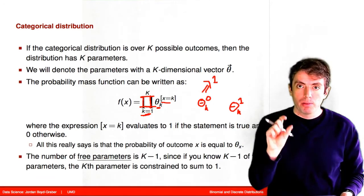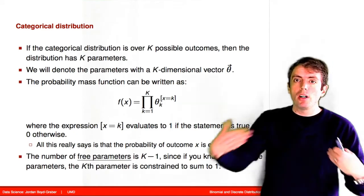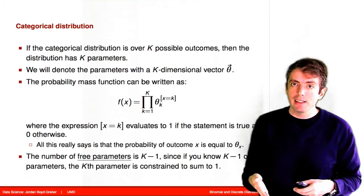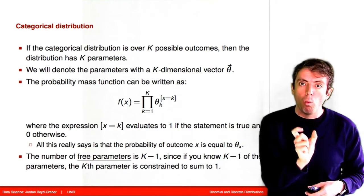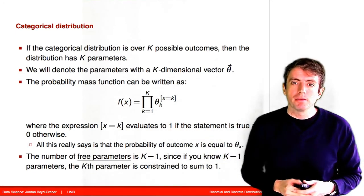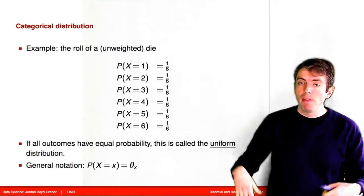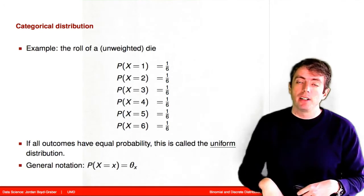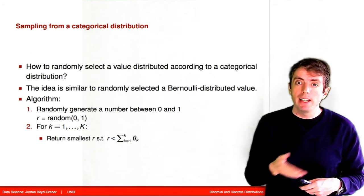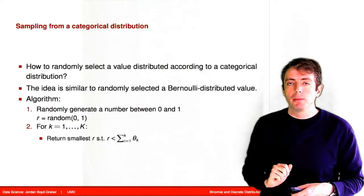You'll notice that the number of free parameters is actually k minus 1. If I tell you all but 1 of the parameters of this vector, you can find the last one by taking 1 minus all of the previous probabilities. Just like the Bernoulli distribution had one free parameter but two possible outcomes, here we have k possible outcomes but k minus 1 free parameters. The canonical example is a k-sided die. With a uniform distribution over k things, the probability of each possible event is 1 over k — so for 6 sides, it's 1/6.